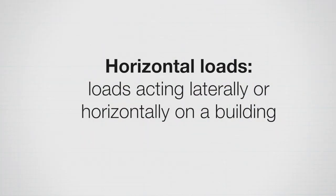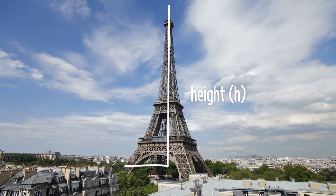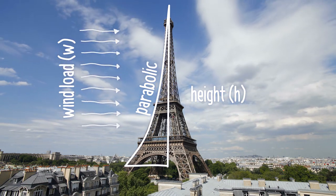We also have to deal with lateral or horizontal loads. The two main horizontal loads on buildings are wind and earthquake. Wind pushes on the side of the building, while earthquakes generate ground motion that also produces a lateral force. A wind load on the side of a building applies forces and causes it to bend like a beam — we saw this with the Eiffel Tower, which we analyzed for wind load and found it behaves just like a cantilever beam.